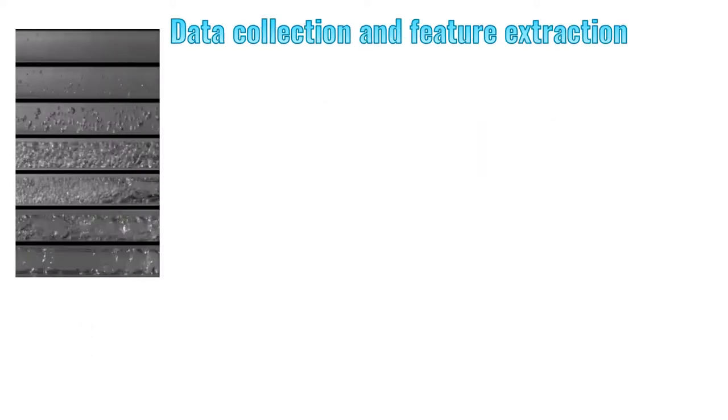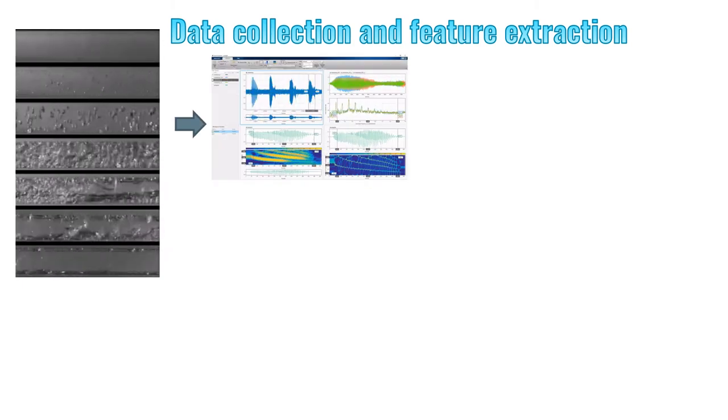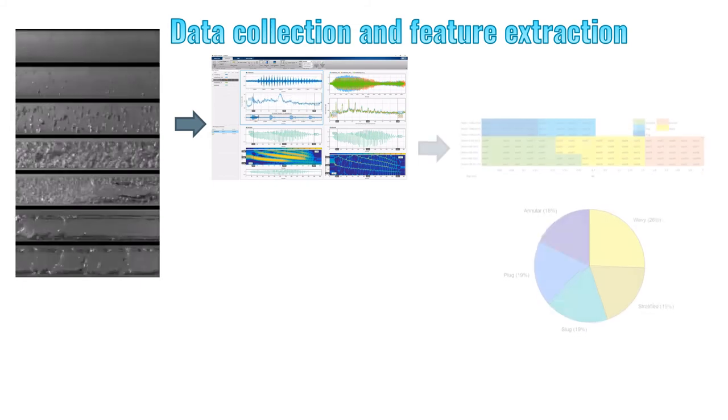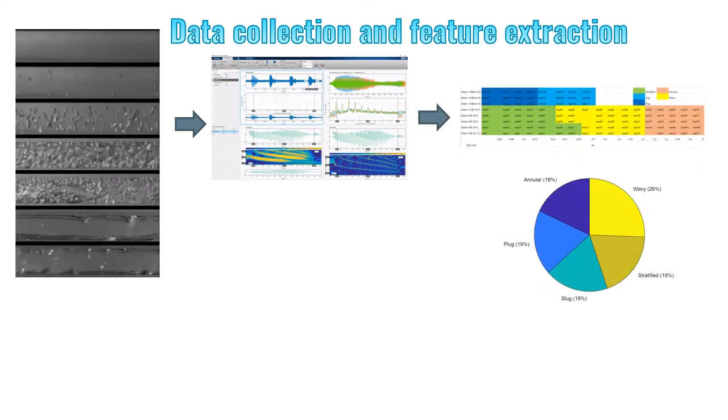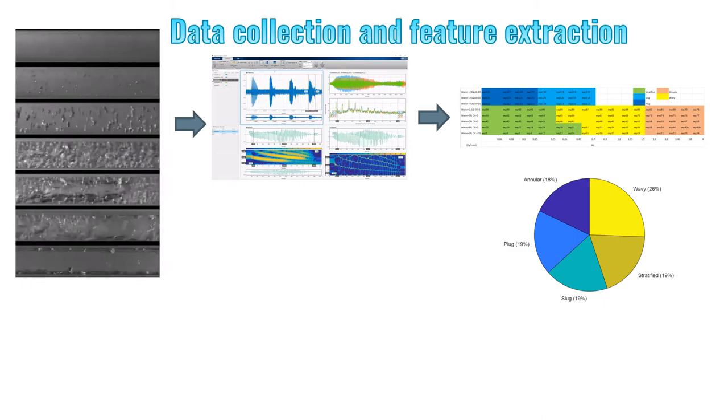The series of experiments were conducted by mixing air, water, and oil at different flow rates. Different flow patterns were obtained by changing the mass flow combination of water, oil, and air. Based on the visual inspection, the test matrix was developed by classifying the flow regimes into stratified, wavy, annular, plug, and slug flow.